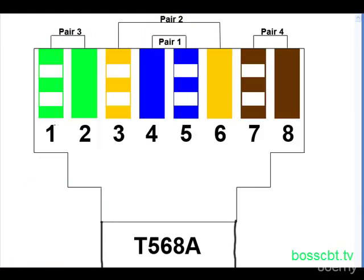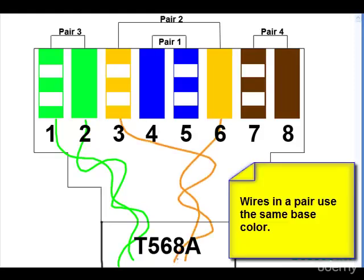Each wire in the pair uses the same base color. Your green and white is going to be paired, twisted, with green. Likewise, the orange cable is going to be twisted with the orange and white. If you have a pair, it should use the same base color.